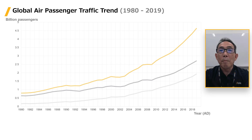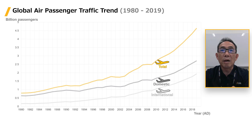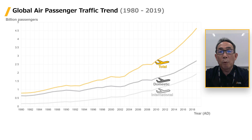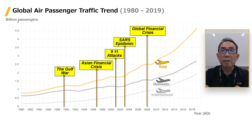Please look at how the number of passengers on aircraft has been continuously increasing. The light gray line shows the number of international flight passengers. The dark gray line shows the number of domestic flight passengers, and the orange line shows the total number of passengers. Between 1980 and 2000, the number of passengers doubled. From 2000 to 2014, the number of passengers doubled again, despite various global incidents. You can see from this data that the number of passengers increased steadily.